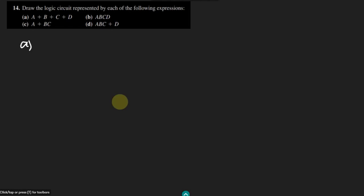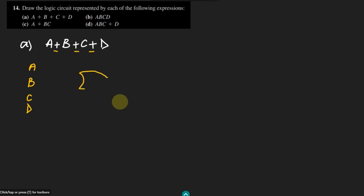The first expression we have here is a plus b plus c plus d. We can see that four variables are involved. We have four inputs which are a, b, c, d and there is an operation performed between them — the plus operation — and in logic circuits we call this the OR operation.